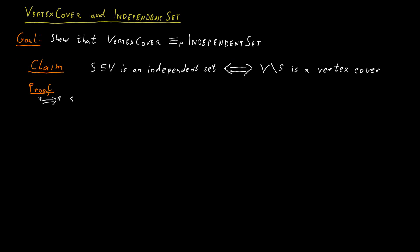To see this, suppose S is an independent set. Consider an arbitrary edge (U, V) in the graph. Since S is an independent set, at most one of the endpoints U or V can be in S. Hence, either U is not in S, or V is not in S.